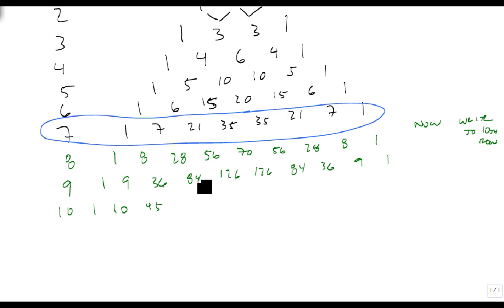And the 10th row is 1, 10, 45, 120, 210, 126 plus 126 is 252, then 210 again, 120, 45, 10 and 1.